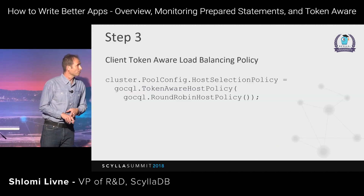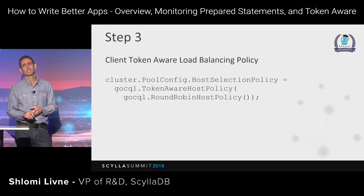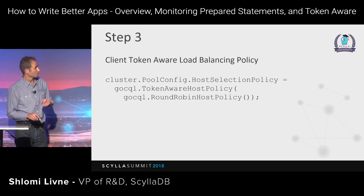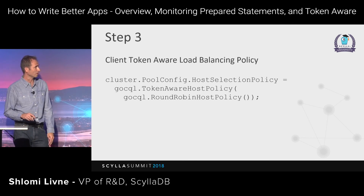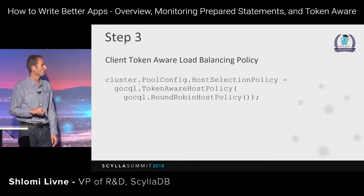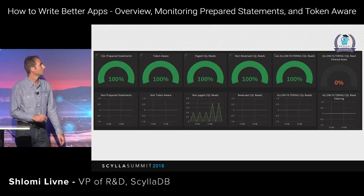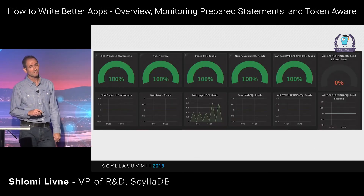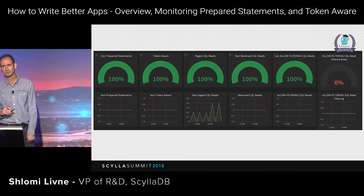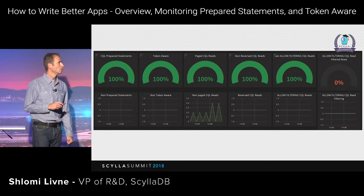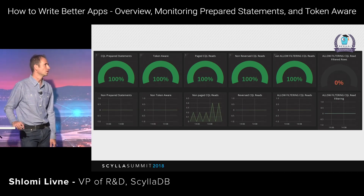In step three of the sample application, we fix this. In GoSQL, you define a token-aware host selection policy. Once we set this up and run step three, everything is green. We fixed two small issues and we're very happy — it was very simple.